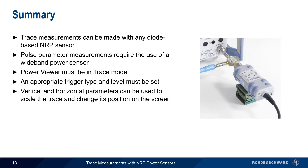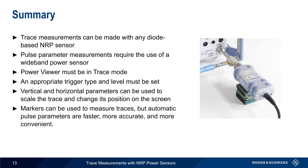Lastly, although we can use markers to measure traces, the automatic pulse parameter measurements are a faster, more accurate, and more convenient way of making these kinds of measurements.